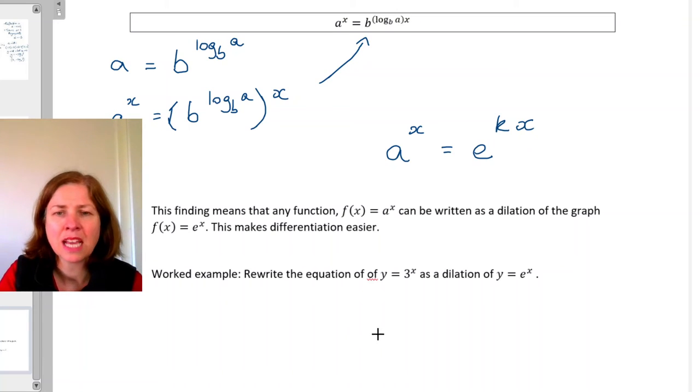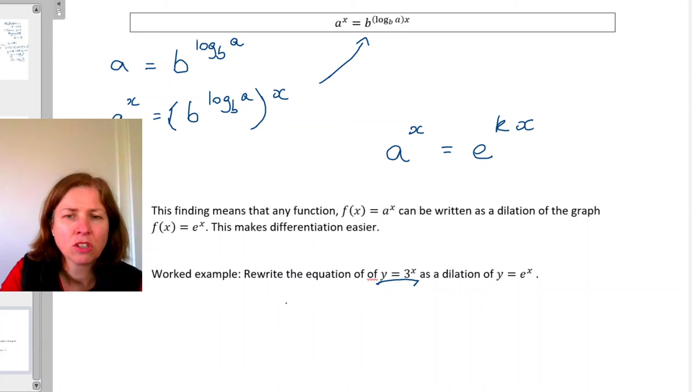So let's do this example. I need to rewrite y equals three to the power of x as a dilation of y equals e to the power of x. So it's y equals three to the power of x, but I need it to be e to the power of... Now my base here is three, so a is three in this, so it's going to be log base e of three.